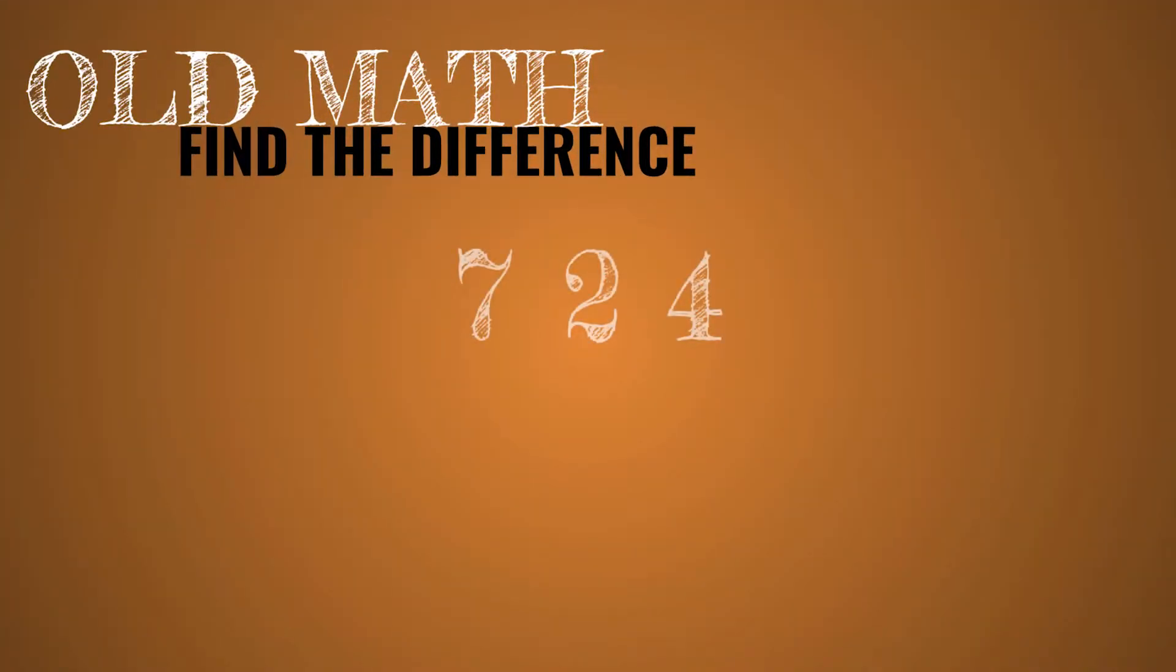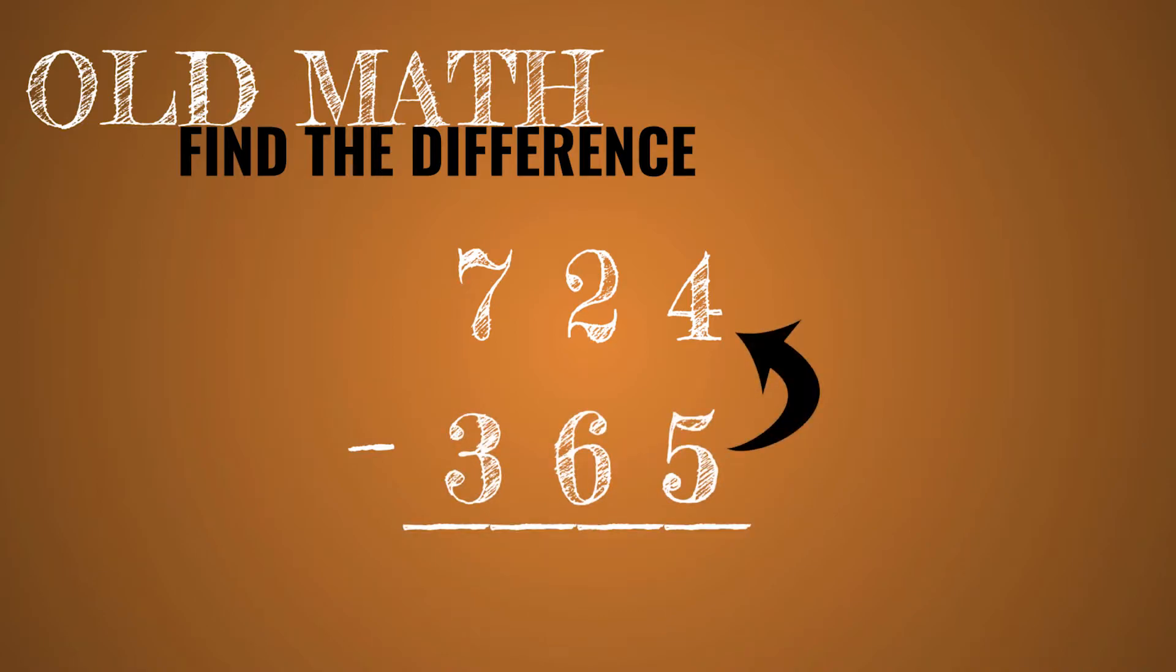So old math, when you were finding the difference, you would use the borrow and pay back method. So you would try to take 5 from 4, but you can't. So you would borrow 1 from the 2 and the 4 would become a 14. But you would pay back that 1 by subtracting an additional 1 in the next column. 14 minus 5 is 9.